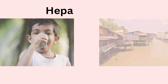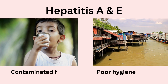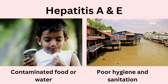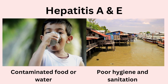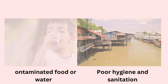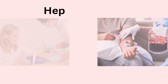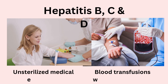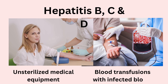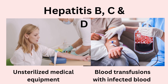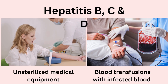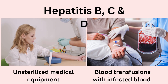Different types of hepatitis spread in different ways. Hepatitis A and E spread by consuming contaminated food or water and through poor hygiene and sanitation. Hepatitis B, C, and D transmit through blood and body fluids, sharing needles or unsterilized medical equipment, and blood transfusions with infected blood.